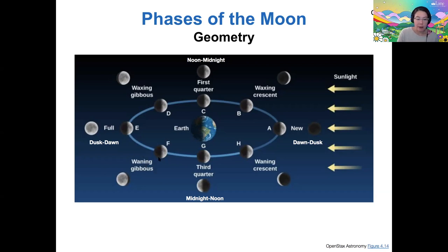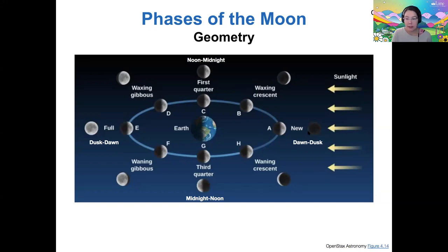After the full moon we go into the waning phases — waning meaning that less and less of the moon's surface is illuminated day by day. First comes the waning gibbous, because gibbous means more than half illuminated, then the third quarter moon — a half moon illuminated on the left-hand side — and finally the waning crescent, a crescent moon illuminated on the left-hand side, losing light until it again becomes the new moon. Those are all the naming conventions: waxing versus waning, crescent versus gibbous, and first quarter versus third quarter.